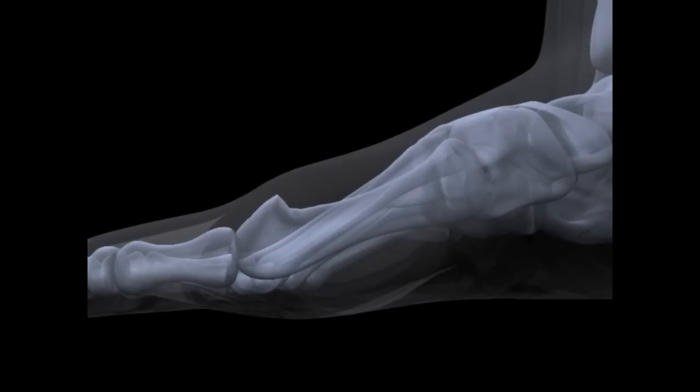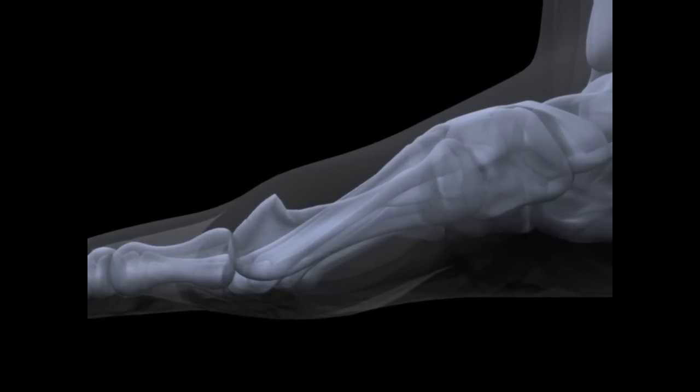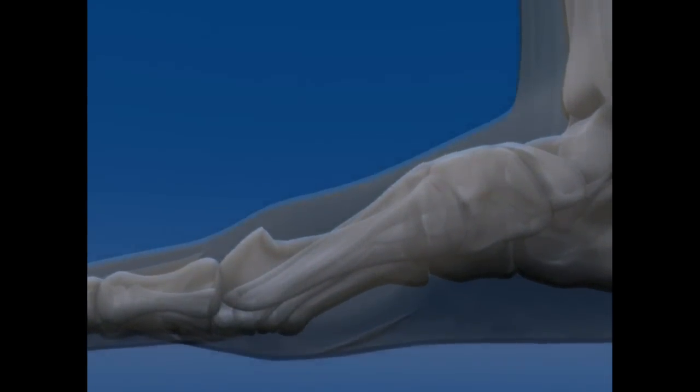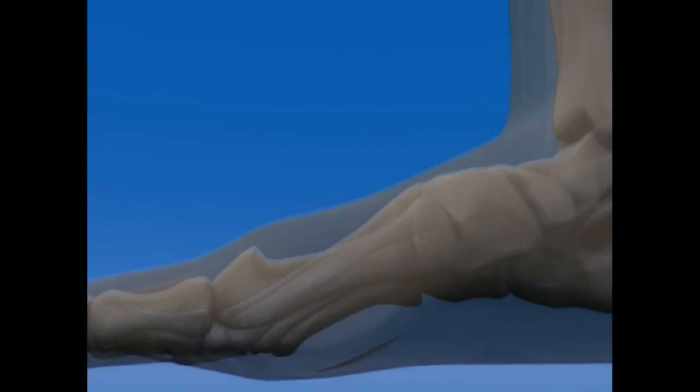Over time, hallux limitus can lead to formation of an exostosis on the dorsal surface of the first metatarsal head and painful swelling on the dorsal surface overlying the first metatarsal head.